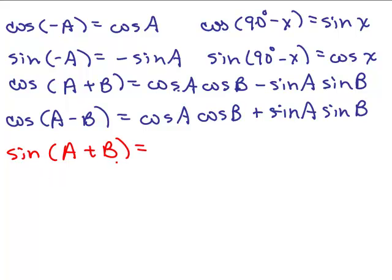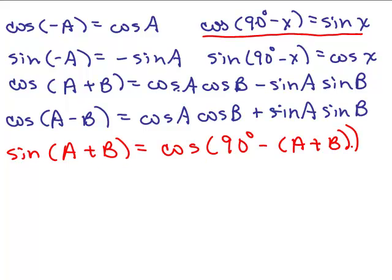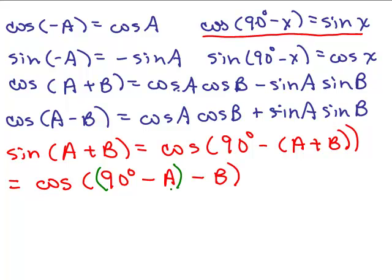I'm going to use this identity: the sine of an angle is the same thing as the cosine of 90 minus that angle. But the angle isn't x, it's a plus b. So this becomes the cosine of 90 degrees minus the angle (a plus b). I'm going to rewrite that by distributing the minus sign: the cosine of 90 degrees minus a minus b. Then I'll group the first two terms as (90 minus a), so it looks like the cosine of one angle minus another angle, and I'll use the cosine of a minus b identity.